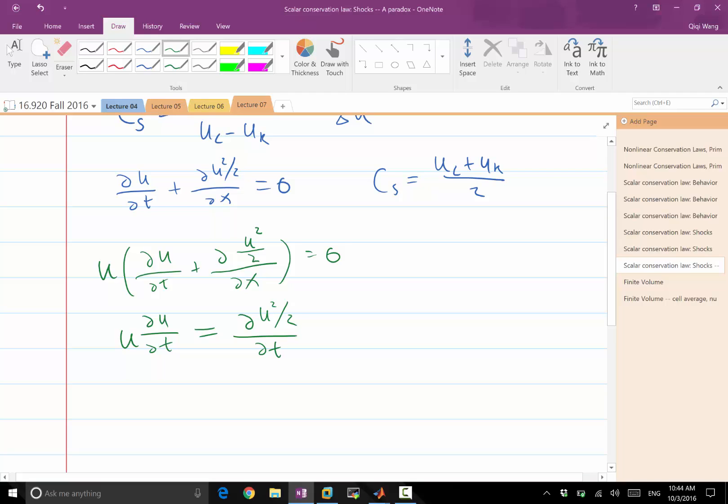This is the same kind of chain rule we use to go back and forth between the primitive form and conservative form of Burger's equation.